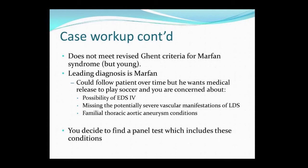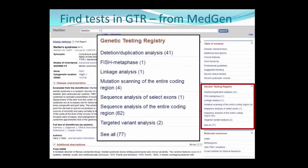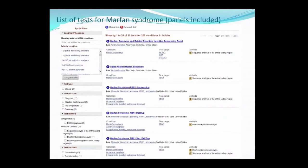So ideally, you want to find a panel that covers the genes for all of the conditions in your differential diagnosis. You can go directly to the GTR homepage to start your search, but since you're already familiar with MedGen, you can transfer to the GTR by clicking one of the links on the right side panel. This section gives a breakdown of tests for Marfan syndrome by methodology. Since you want a wide-reaching panel, you can click the link 'See All' to see all tests available in the GTR that test for Marfan syndrome.